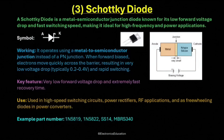When the diode is forward-biased, electrons move directly from the N-type semiconductor into the metal region. Because there are no holes involved as in a P-N junction, there is no charge storage at the junction. As a result, the current can start and stop almost instantly, which gives the Schottky diode its extremely fast switching speed. The voltage drop across a Schottky diode when it is conducting is typically between 0.2 and 0.4 volts, which is much lower than the 0.7 volts of a silicon P-N junction diode. This low voltage drop means less power is wasted as heat, making Schottky diodes highly efficient for use in power electronics.